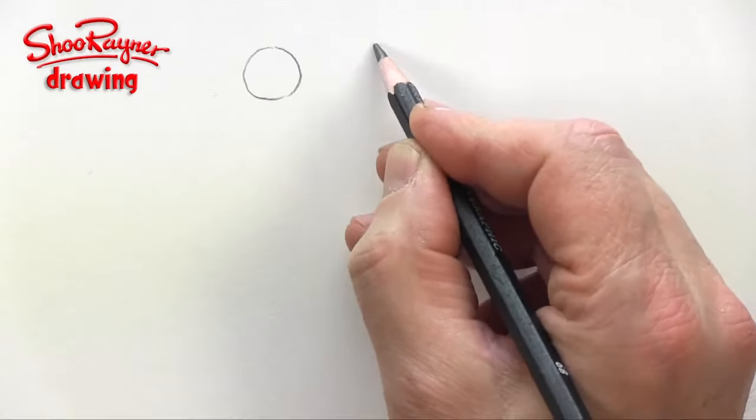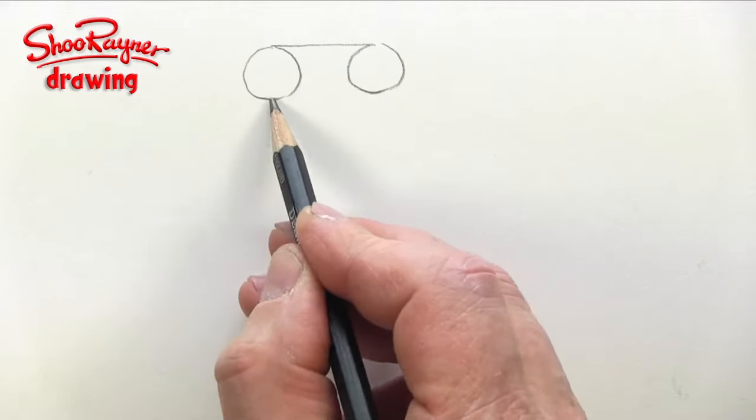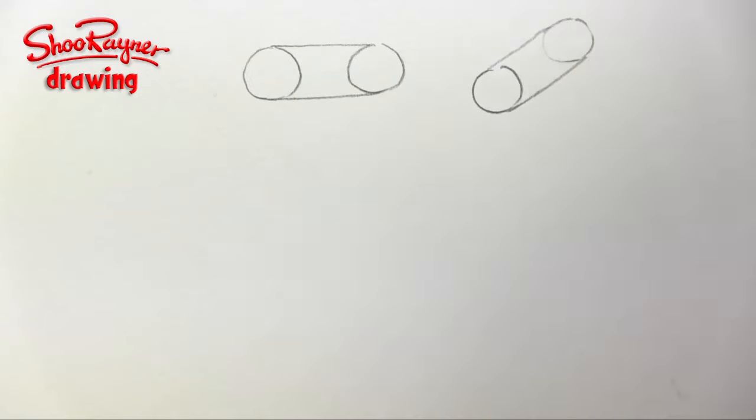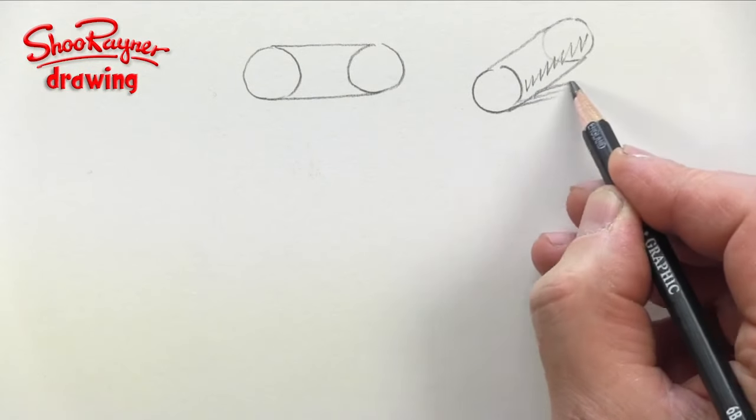We can draw this more simply by drawing two circles and then connecting the edges with two lines. This will give you a drawing of something that looks like a rod or a piece of doweling.